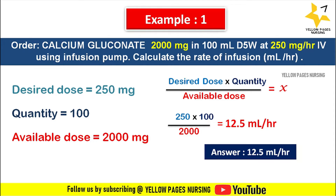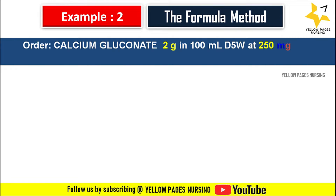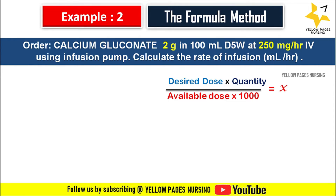Let's discuss one more example. Doctor's order is calcium gluconate 2 gram in 100 ml D5 water at 250 mg per hour IV using infusion pump. Calculate the rate of infusion, that is ml per hour. The formula is: desired dose multiplied by quantity divided by available dose multiplied by 1000, equals X.